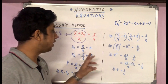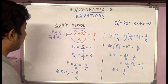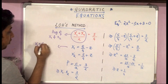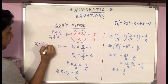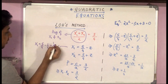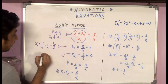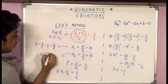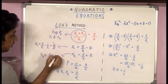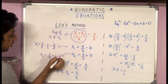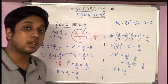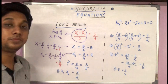Now substituting the value of z: x₁ = 5/4 − 1/4 = 4/4 = 1, and x₂ = 5/4 + 1/4 = 6/4 = 3/2. So the roots of the quadratic equation are 1 and 3/2.